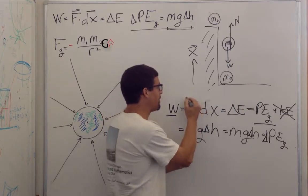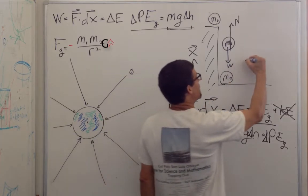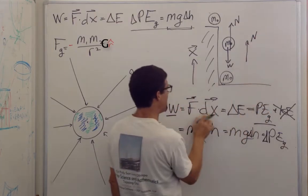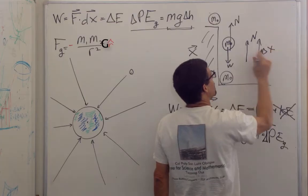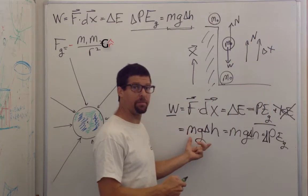Now, I conveniently just dropped this dot product. Am I allowed to do that? Let's see. This is the direction of the force of Pete, and this is the direction of my delta x. Those are parallel. So that dot product goes to one, and I can drop it.